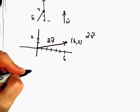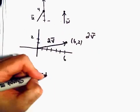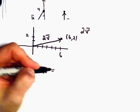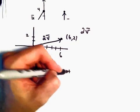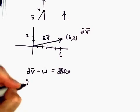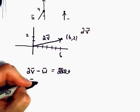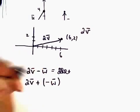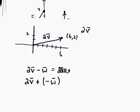Now, we wanted to subtract W from that. The way that I'm going to think about this is being 2V plus negative W. So again, a positive and a negative make a negative.